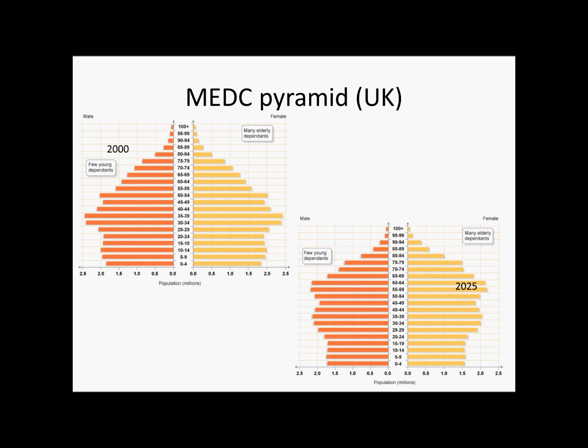If you look at the 2025 UK pyramid, you've got the same sort of story. People are living a bit longer — the 65 and upwards bracket generally has more people. Apart from that there's not much change, so it just shows improvements in healthcare for the elderly.